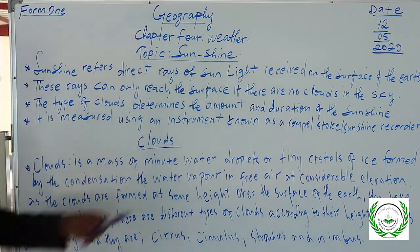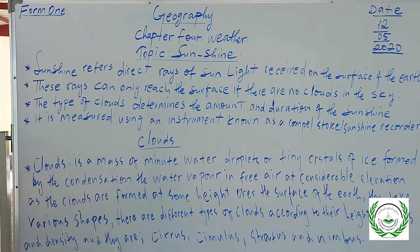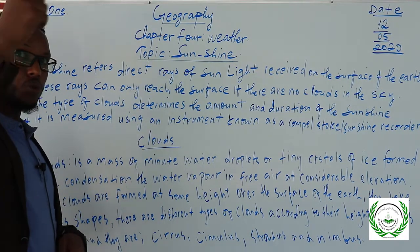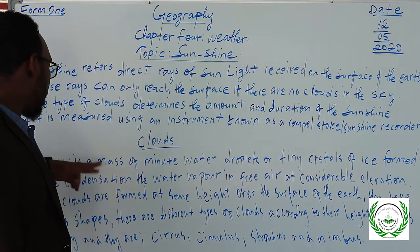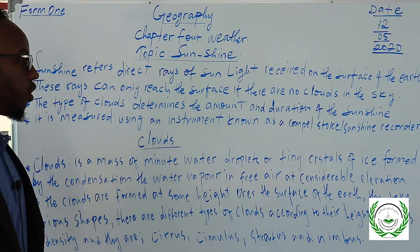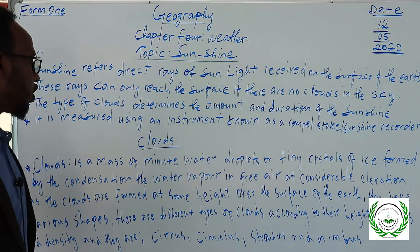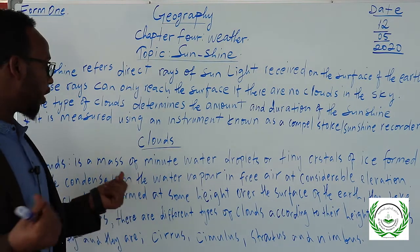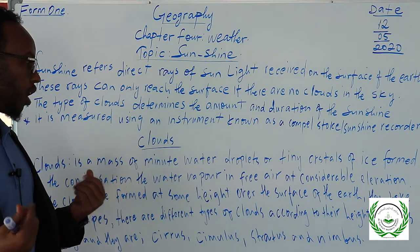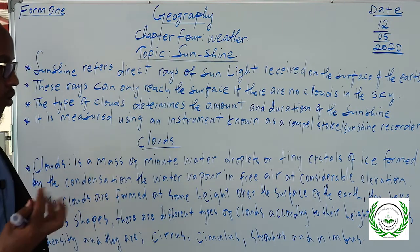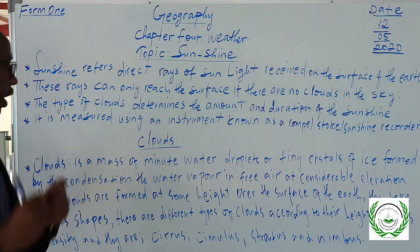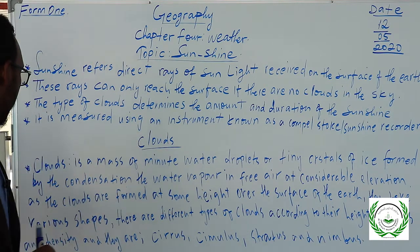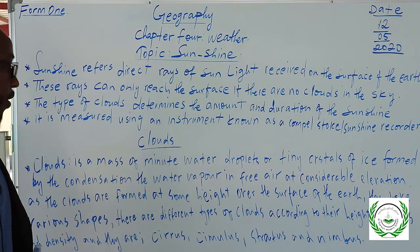The last element we call clouds. Today there are no clouds. A cloud is a mass of minute water droplets or tiny crystals of ice formed by the condensation of water vapour in the free air at considerable elevation. As the clouds are formed at some height over the surface of the earth, they take various shapes.